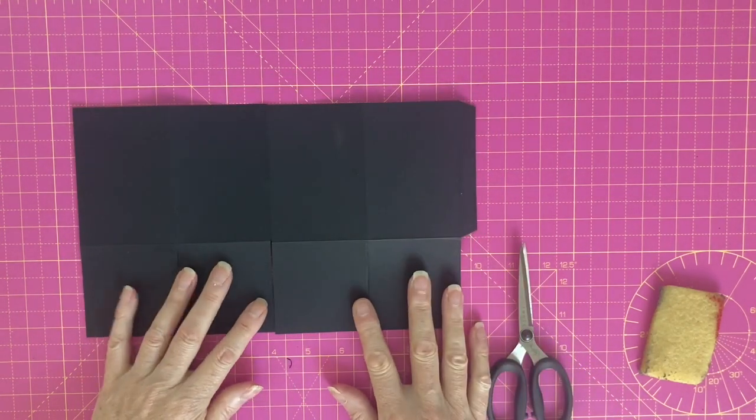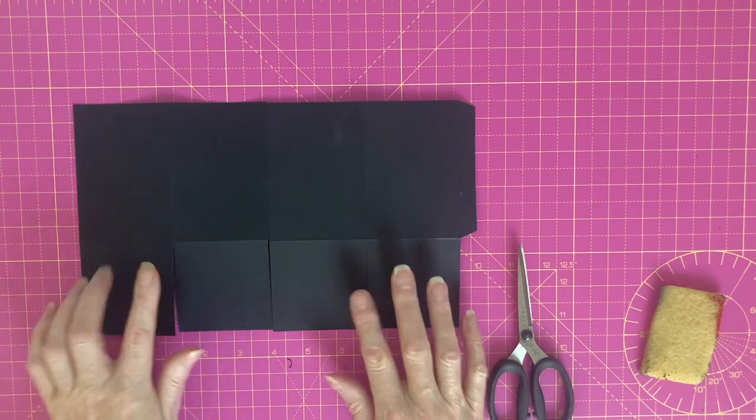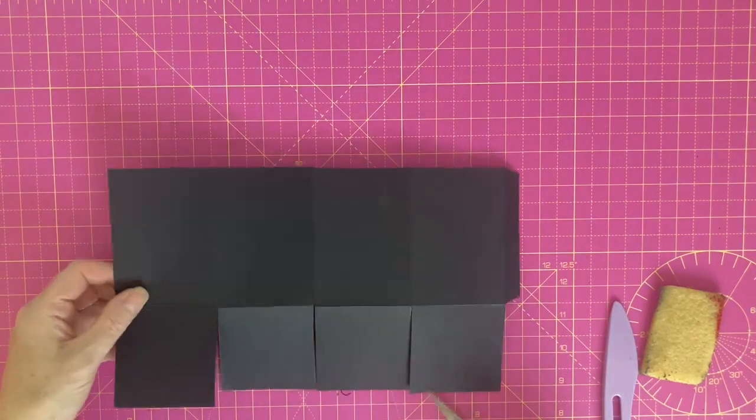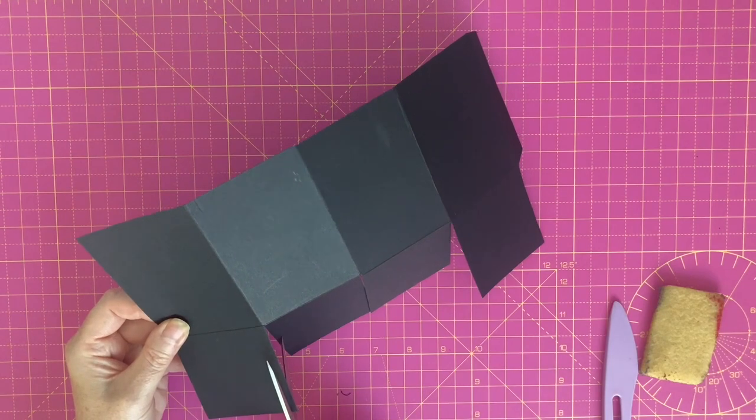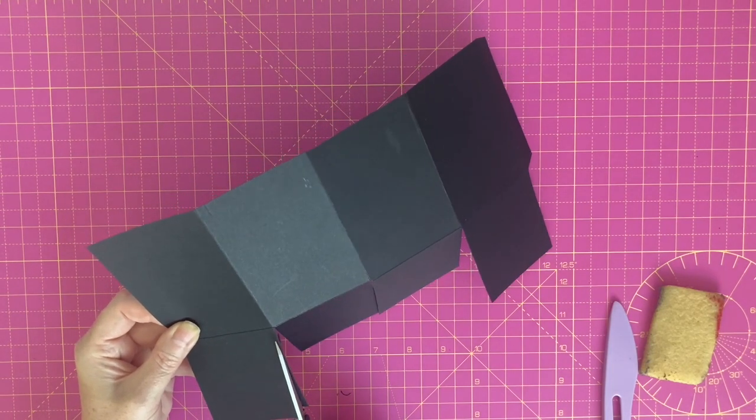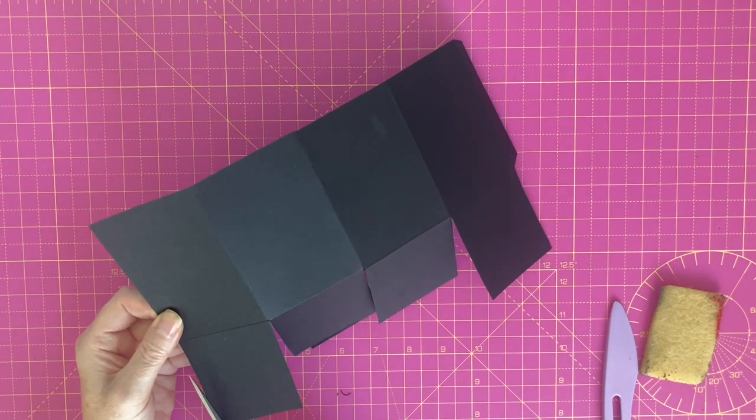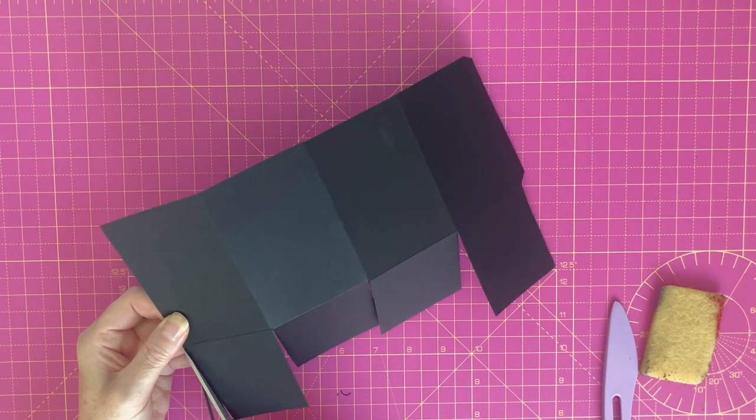And from three of the four tabs I'm going to cut away a wedge. So I'm going to have this as my bottom piece and I'm going to cut away a wedge from each of the three other tabs.